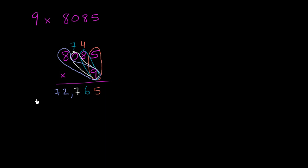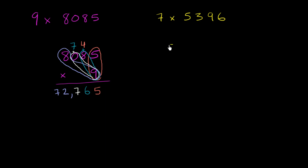Let's do one more example just to make sure this process is really clear. I also want you to think about why this works. So let's try 7 times 5,396. I encourage you to pause and try it on your own. I'm going to rewrite it as 5,396 times 7.